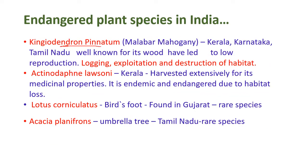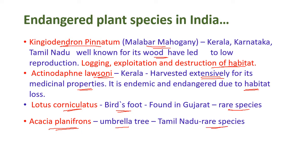Aglaia adiantifolia, the Malabar mahogany from Kerala, found in Kerala, Karnataka, and Tamil Nadu, is endangered due to logging, exploitation, and habitat destruction. Actinodaphne lawsonii from Kerala is harvested extensively for its medicinal properties and is endemic and endangered due to habitat loss. Lotus corniculatus, known as bird's foot, found in Gujarat, is also a rare species. Acacia planifrons, the umbrella tree from Tamil Nadu, is also a rare species.